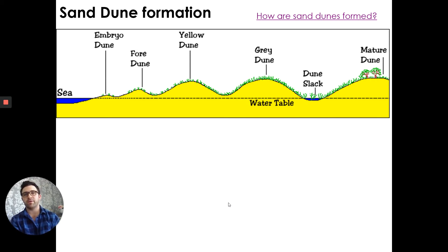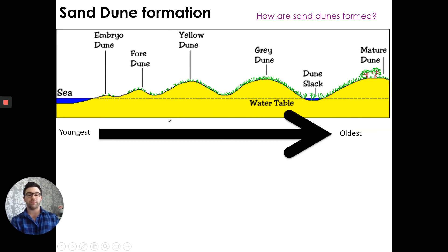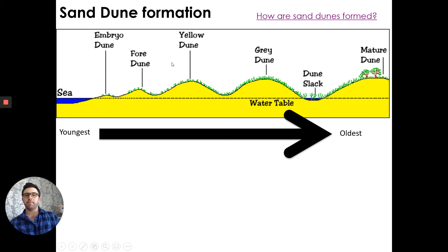Sand dunes are created by the wind. As swash pushes material up onto the beach creating the berm, some of that material gets stuck around small objects — a little bit of vegetation or driftwood — and over time more sediment builds up. Sand dunes form in stages from youngest to oldest, with the youngest dunes nearest the sea. This first dune is our embryo dune, where sediment just starts to build up.